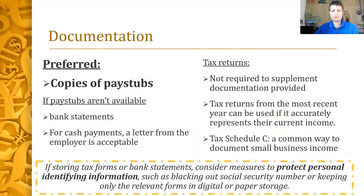Copies of pay stubs are the preferred documentation. If pay stubs aren't available, bank statements or letters from the employer are acceptable with as much detail as possible. NP does not require nor recommend that individual income tax returns be collected and stored for every applicant, but only when it's the only or best method for verifying income. Having filed income taxes is not a requirement for opening an IDA. Tax returns can be used to document income if the most recent year accurately represents current income. Schedule Cs are a common way to document small business income — remember to black out social security numbers or keep only relevant forms in storage.